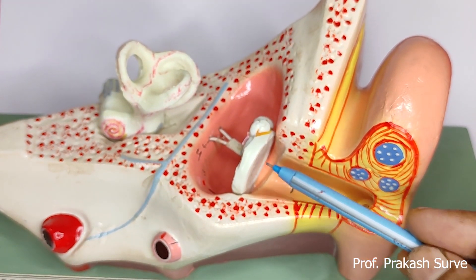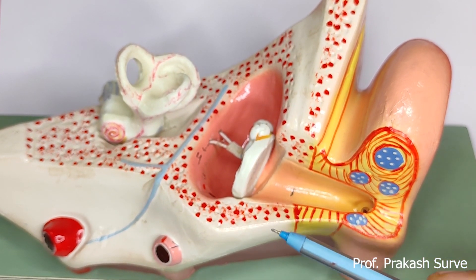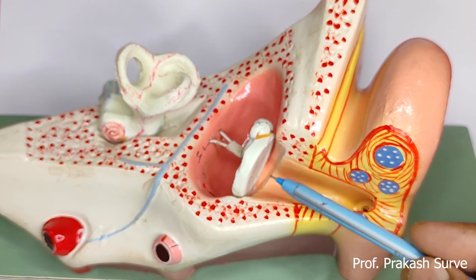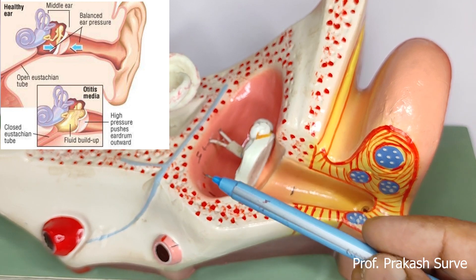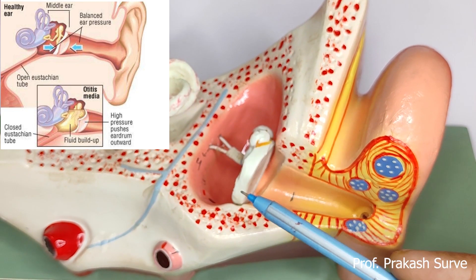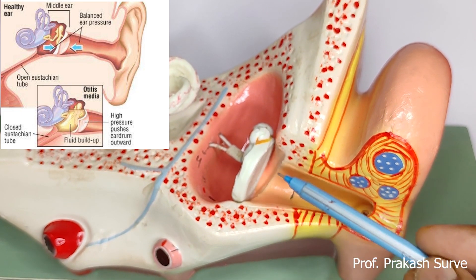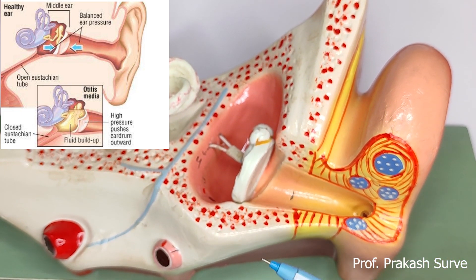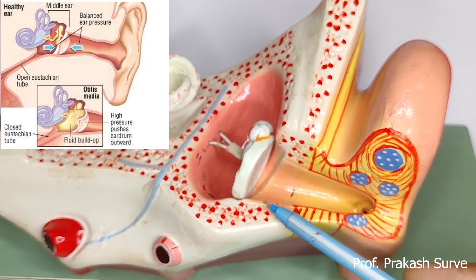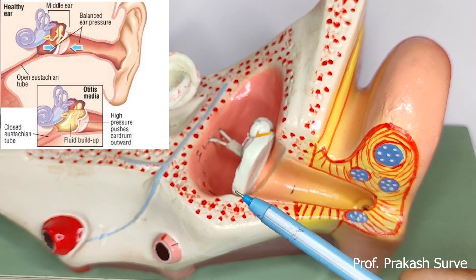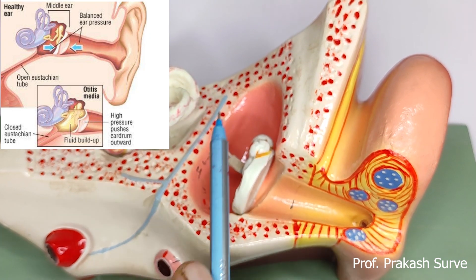The tympanic membrane, present here, is a delicate membranous structure which transmits the sound waves to the middle ear. It is formed of connective tissue, covered with skin on the outside, and inside it shows a mucous membrane.